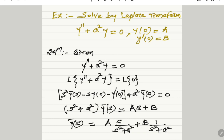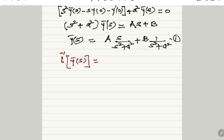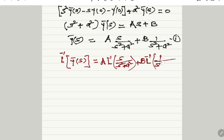The next step is to take the inverse Laplace transform on both sides to get the required solution. Taking the inverse Laplace transform of the left-hand side gives the inverse Laplace of Ȳ(s). This equals the inverse of the right-hand side terms, taking the inverse of each separately: a is a constant outside, then the inverse Laplace of s / (s² + a²), plus b as a constant outside, then the inverse Laplace of 1 / (s² + a²).